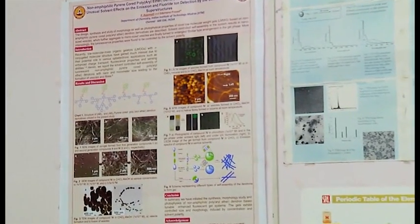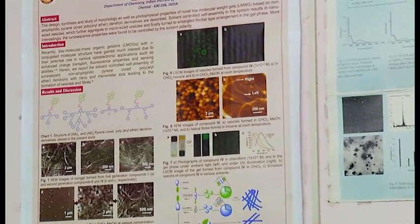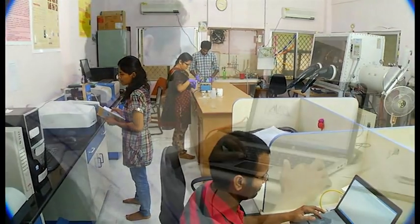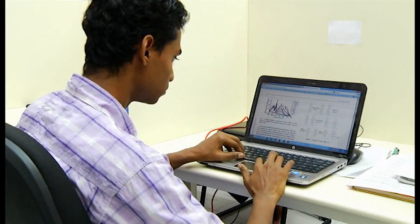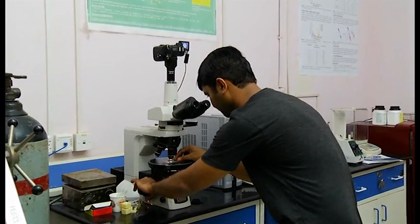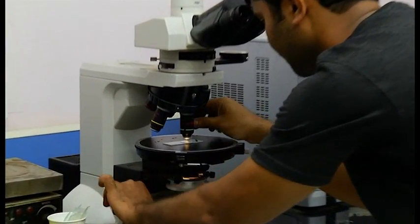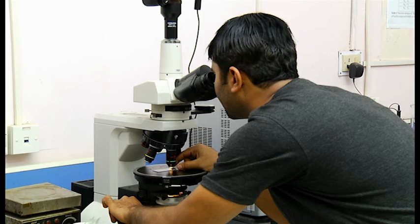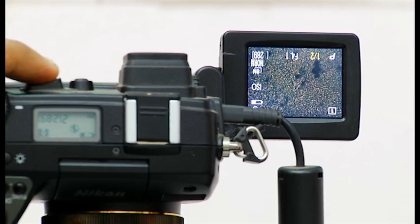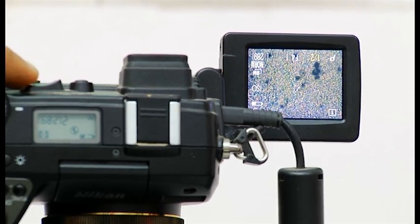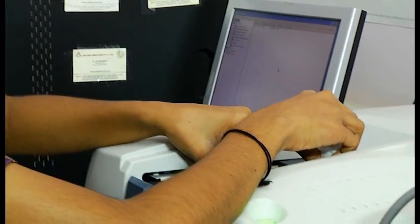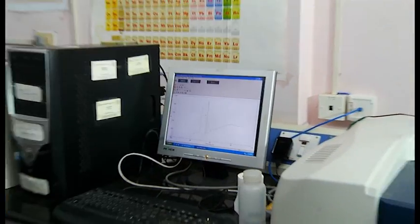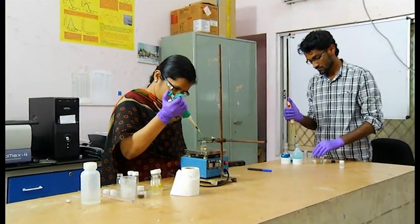Our research group in IIT Madras have three projects regarding nanochemistry. One project deals with using renewable sources to generate and stabilize metal nanoparticles. In another project, we use dendritic nanostructures to generate and stabilize silver and gold nanoparticles. Our interest is to study the kinetics of formation and growth of metal nanoparticles. Third project is the water purification using dendritic nanostructures. We develop organic-inorganic hybrid systems using dendrimers and then study the removal of toxic metal ions as well as textile dyes which are dissolved in water.